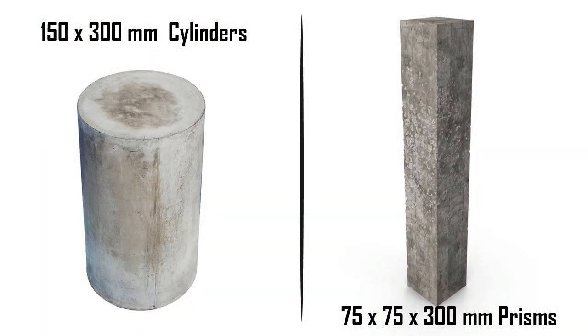Resonant frequency methods are mostly used in the laboratory with specimens of size 150 x 300 mm for cylinders or 75 x 75 x 300 mm for prisms.